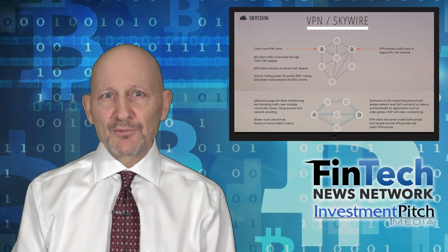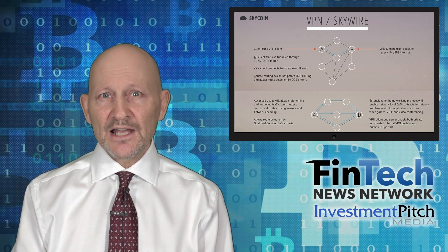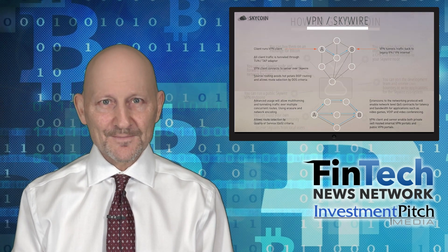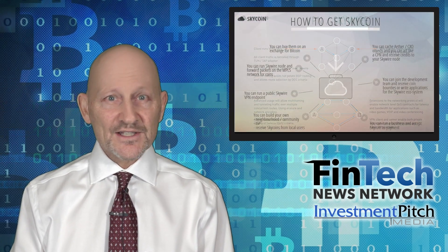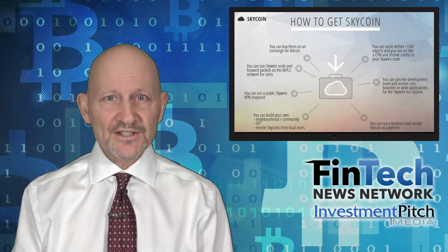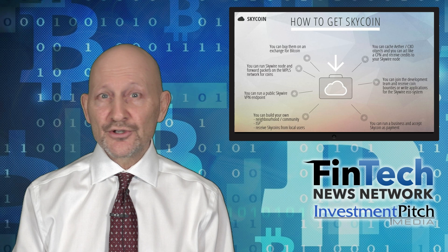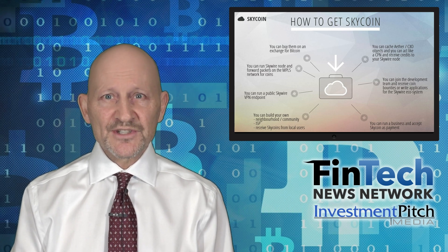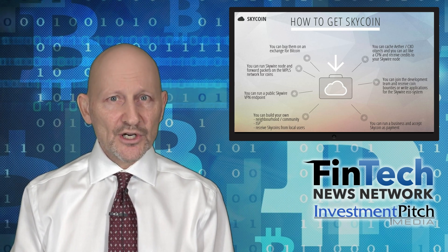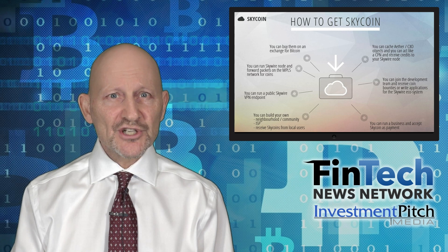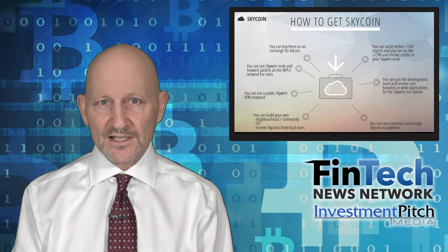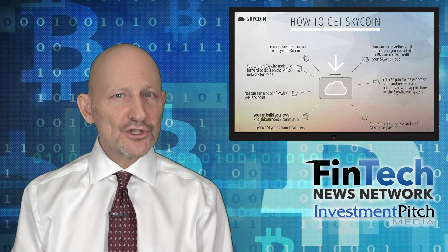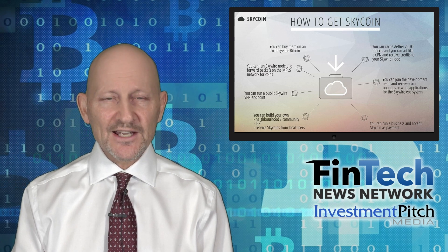SkyNet is the backbone of the distributed network system and allows users to become their own internet service providers. Skycoin is lightning fast with transactions that take less than two seconds and have no block limits. It's 100% anonymous and highly secure, with built-in protection against all known network attacks. It has no heavy processing requirements, making it a good choice for protecting the environment.